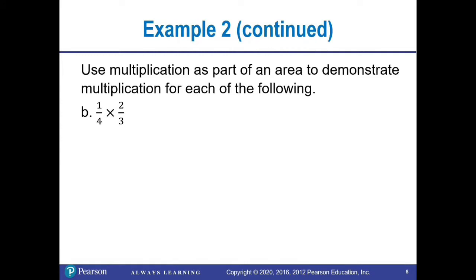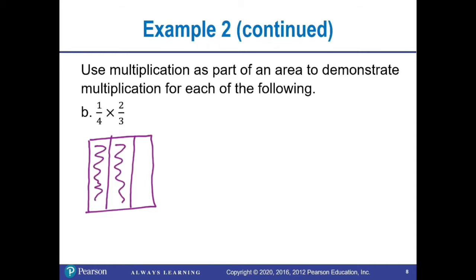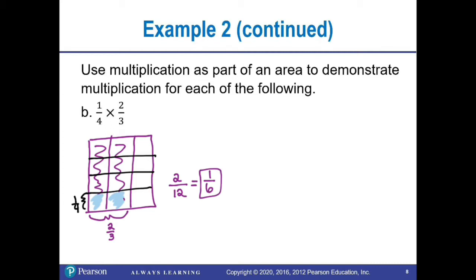In part B, we have one-fourth times two-thirds. Draw a rectangle, divide into three equal parts, and shade two to represent two-thirds. For one-fourth, divide the rectangle horizontally into four parts and look at only one of those four parts. Where one-fourth and two-thirds overlap, there are two sections. My rectangle is now divided into twelve sections, so our fraction is two over twelve. This simplifies: two goes into itself once and into twelve six times, giving a final answer of one-sixth. Always simplify when you multiply.